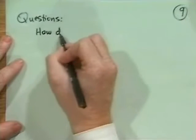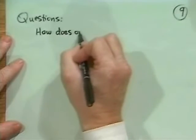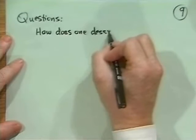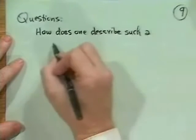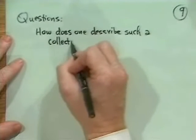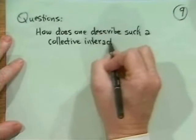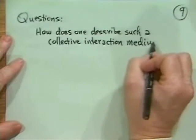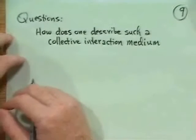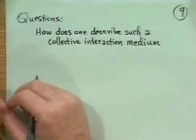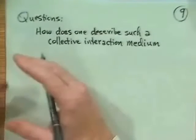The fundamental questions for collective interactions—and that's what the questions of plasma physics are—are: How does one describe such a collective interaction medium? It's the collective interaction, by the way, which is often used to mean plasma physics when you talk about quark gluon plasmas or something like that, fluid kinetic theory, when it's not just two-particle effects.